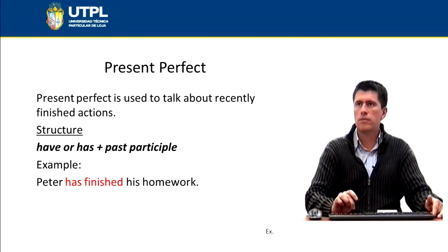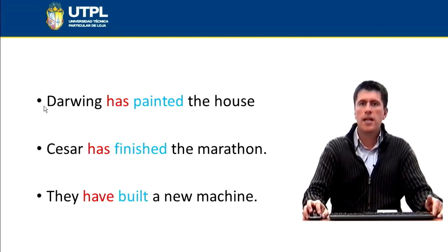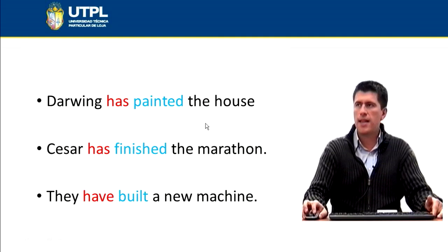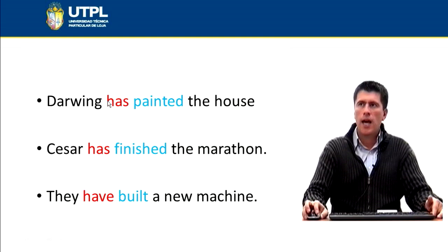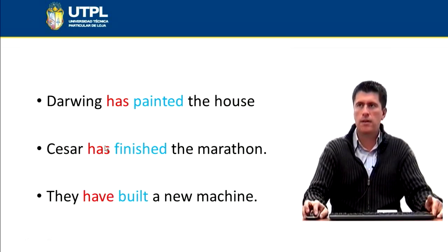Examples: Darwin has painted the house - has and the verb in the past participle. I'm using has because the subject is Darwin. Next example: Cesar has finished the marathon - has plus the verb in the past participle. And the last example: they have built a new machine. We're using have in this case because the subject is they, plural.